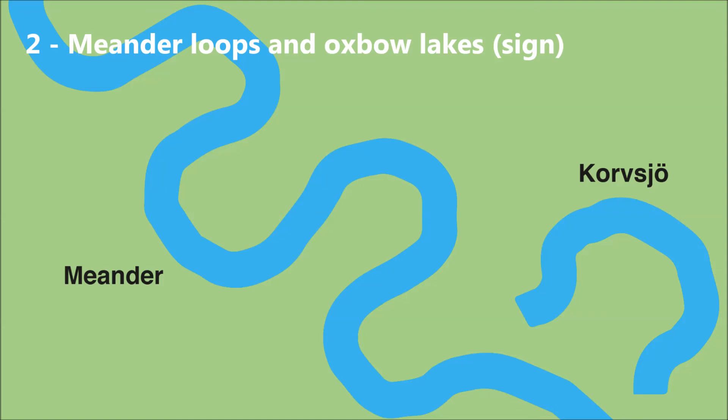In this way, the bends extend outward and the stream forms a snaking pattern. Slow running watercourses often form many and distinct meander loops. Sometimes the water changes its course and cuts through the neck of a loop, creating a new and straighter route. Meander loops that have been cut off in this way are called oxbow lakes. There are a few dried-out oxbow lakes along the Longby-Bakken stream.